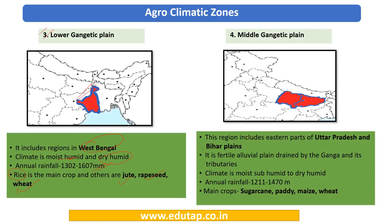The fourth zone is the Middle Gangetic Plain, covering states like UP and Bihar. It is drained by the Ganga and its tributaries like Son, Betwa, and Ken, making it a fertile alluvial plain. The climate is sub-humid to dry humid, with slightly less rainfall than the Lower Gangetic Plain. The main crops are water-guzzling crops like sugarcane and paddy, as well as maize and wheat.